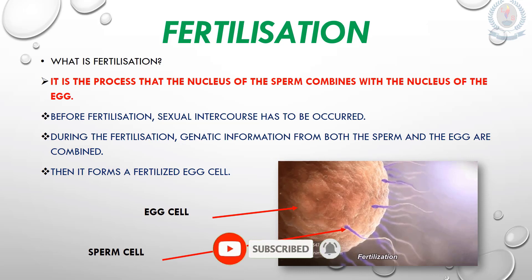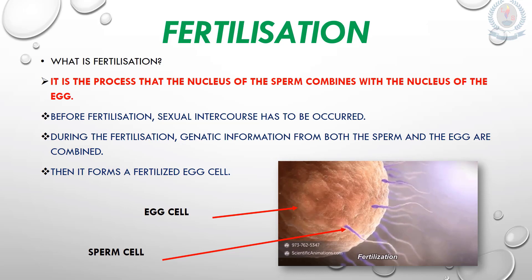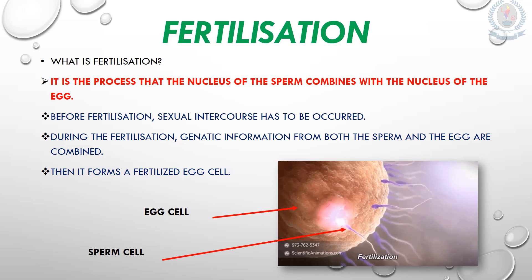What is fertilization? Fertilization is the process where the nucleus of the sperm combines with the nucleus of the egg. Before fertilization, sexual intercourse has to occur. During fertilization, the genetic information from both the sperm and the egg are combined and a fertilized egg is formed. Let's go and see how diet and drugs can affect the fertilization process.